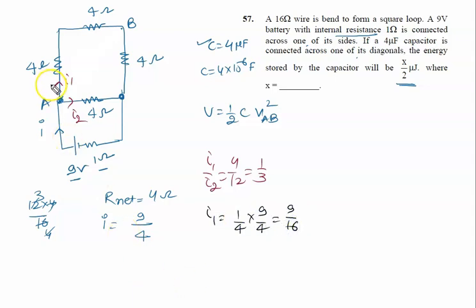So this 9 by 16 ampere current is flowing in this A to B path. So we write the Kirchhoff equation Va minus because current is flowing in same direction. So it is 4 for 8. 8 into 9 by 16 equal to Vb.